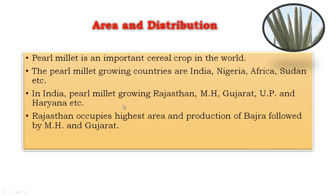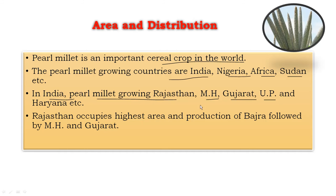Next, the area and distribution of pearl millet. Pearl millet is an important cereal crop in the world. The major pearl millet growing countries are India, Nigeria, Africa, Sudan, etc. In India, the pearl millet growing states are Rajasthan, Maharashtra, Gujarat, Uttar Pradesh, and Haryana, etc. Among states, Rajasthan occupies the highest area and production of Bajra or pearl millet, followed by Maharashtra and Gujarat.